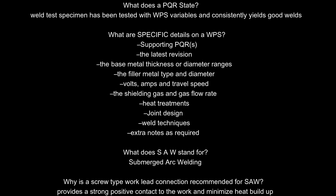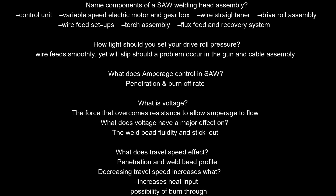What does SAW stand for? Submerged arc welding. Why is a screw-type work-lead connection recommended for SAW? It provides a strong positive contact to the work and minimizes heat buildup. Name the components of a SAW welding head assembly. Control unit, variable speed electric motor and gearbox, wire straightener, drive roll assembly, wire feed setup, torch assembly, flux feed and recovery system. How tight should you set your drive roll pressure? Tight enough so the wire feeds smoothly, yet will slip should a problem occur in the gun and cable assembly.